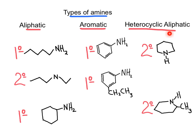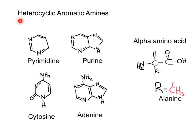An amine in which the nitrogen atom is part of the ring is classified as a heterocyclic amine. There are heterocyclic aliphatic amines as well as heterocyclic aromatic amines. Heterocyclic means the nitrogen is part of the ring, and in the aromatic ones, the nitrogen is also part of the aromatic system — meaning six electrons are delocalized. These can be one ring or two rings.